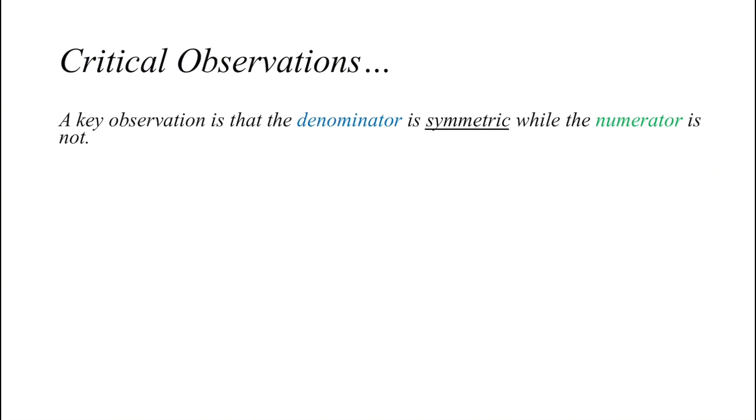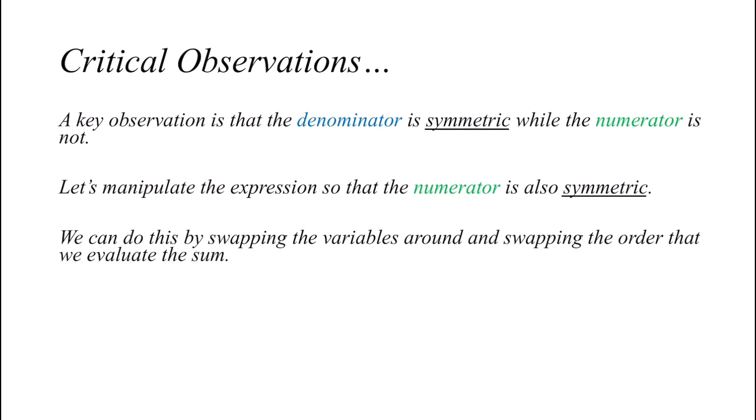So we first observed that the denominator is (a+b)(b+c)(c+a), which is symmetric. Hence, we could manipulate the numerator, which is not symmetric, into its symmetrical form. Here we can swap the variables around, because the denominator will always stay symmetric, the numerator will not, and if we add them, we might get a really nice symmetric pattern.